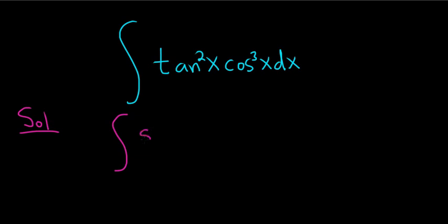So because it's being squared, we can write it as sine squared x over cosine squared x. That's a good first step, and this is cosine cubed x dx.